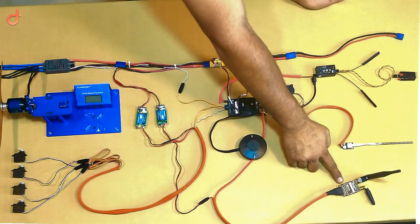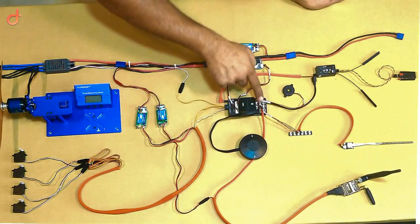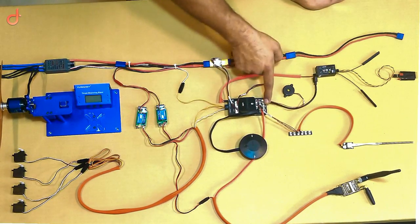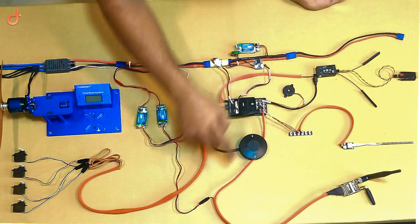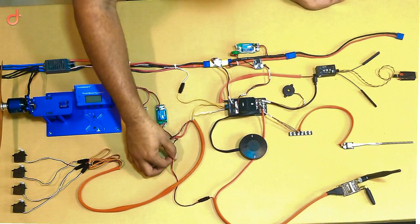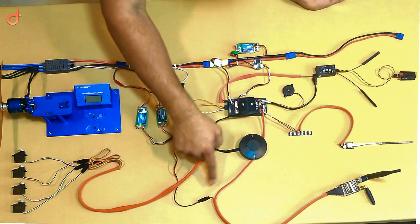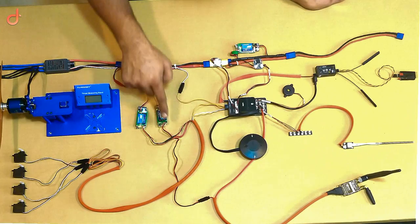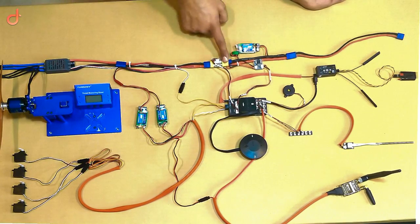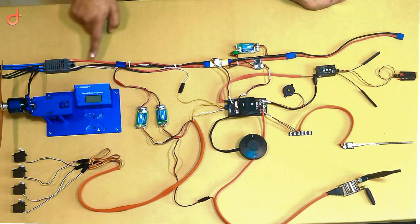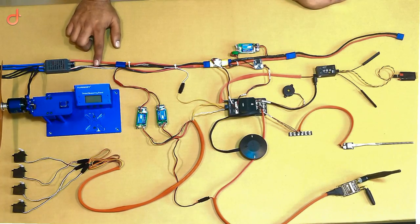Over here, we have the RFD900 and it is connected to the Pixhawk 2 through the telemetry 1 port. If you notice over here, we are getting power separately from a BEC. We are not going to use the power from the Pixhawk 2. We are giving it separately over here and it is connected to the main power cables.